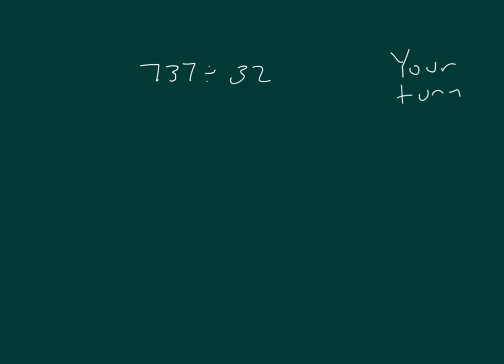Okay, it's your turn. 737 divided by 32. Pause the video while you do your work. Did you say that it goes in 2 times? 2 times 32 is 64. 73 minus 64 is 9. Bring down the 7. It goes in 3 whole times, because 3 times 32 is 96. 97 minus 96 is 1, so our remainder is 1.